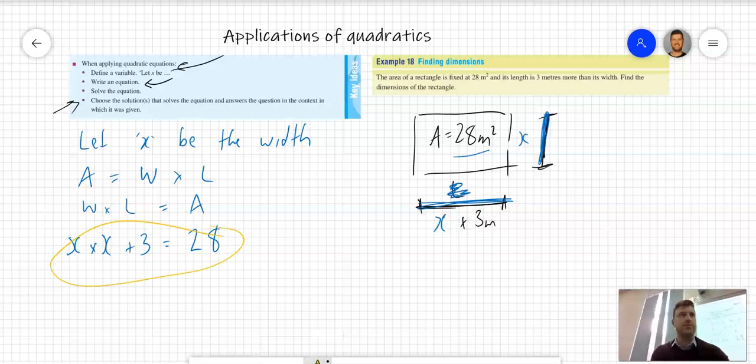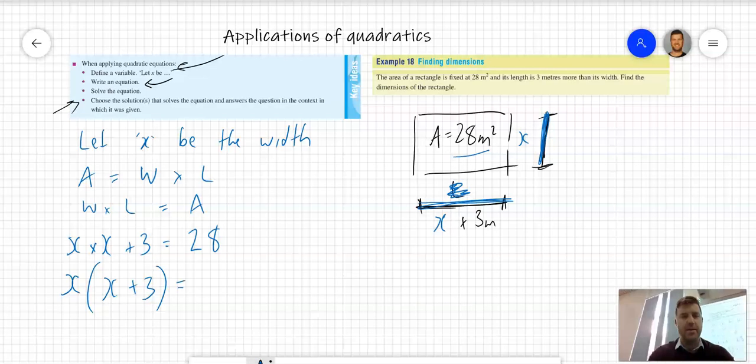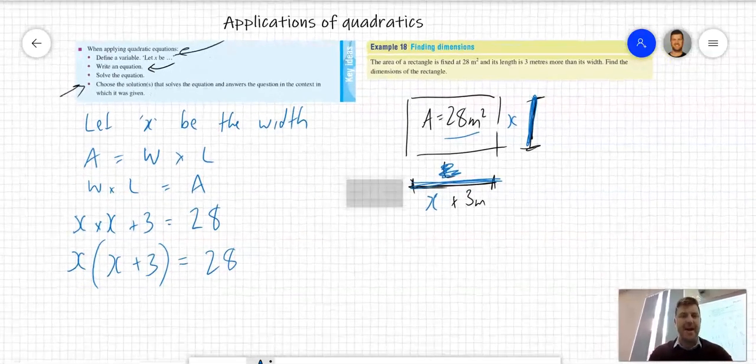x plus 3 should be in brackets, so x is being multiplied by (x plus 3), and that equals 28. If I expand that: x times x is x², x times 3 is 3x, equals 28.